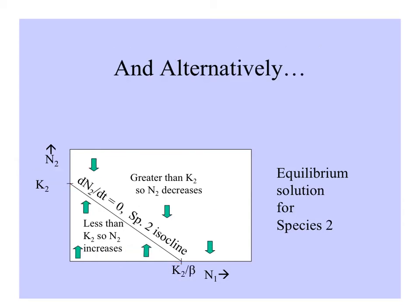We can look at the same for species 2. These are the equilibrium solutions for population growth for species 2. The isocline is drawn from K2 on the y-axis for species 2, and K2 divided by beta on the x-axis. This is the dN2/dt equals 0 isocline — the line of no population change. If the numbers of N2 are above, it's greater than the carrying capacity of species 2, so it will decrease. And if it's below, it's less than the carrying capacity, so it can increase.